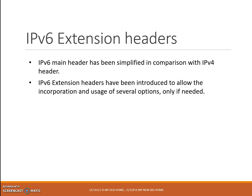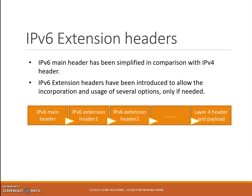IPv6 extension headers have been introduced to allow the incorporation and usage of several options. These IPv6 extension headers, which can be 0, 1 or more, follow the IPv6 main header and come before the layer 4 header, such as TCP or UDP, and its payload.